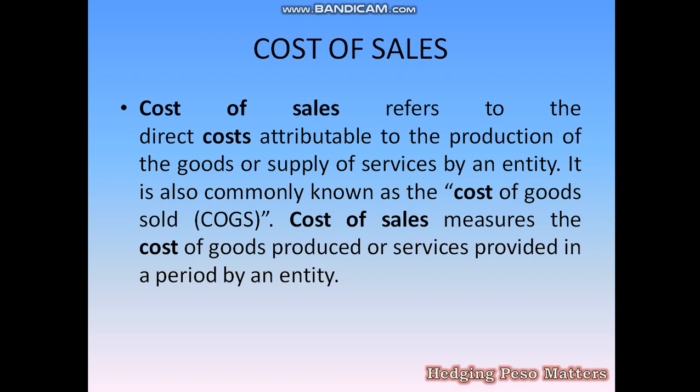Suppose we made the stuffed toy and the cost per piece is one thousand. That is the cost of sales. Cost of sales is different from sales — sales is how much we sold it for. For example, we sold it at one thousand five hundred, so we earned five hundred.